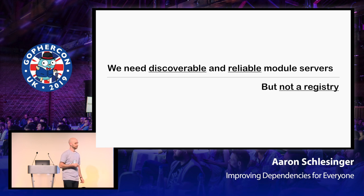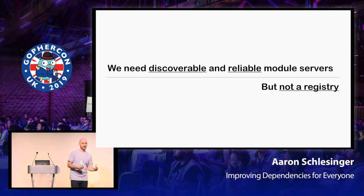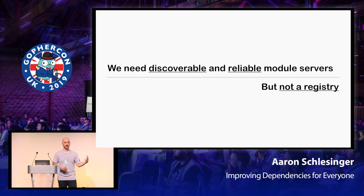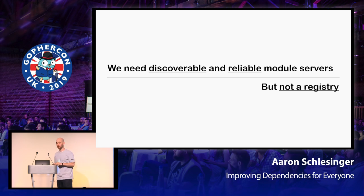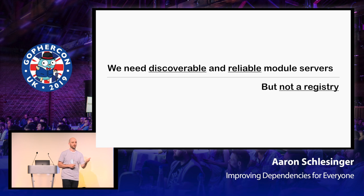We do need the discoverability benefits of a registry, and we do need the reliability that a registry usually has — the cloud infrastructure, SREs, and so on. When we're writing our code day over day, we want to just do a go get and make sure it's talking to a server that's serving up our code. But we don't want a single registry, because that's the single point of failure, the target for lawyers, the place that can really mess everything up if we all depend on it.